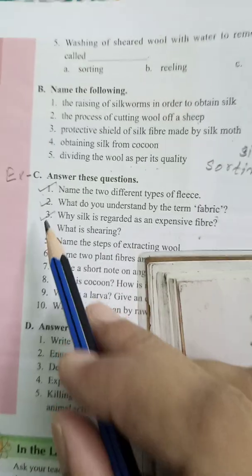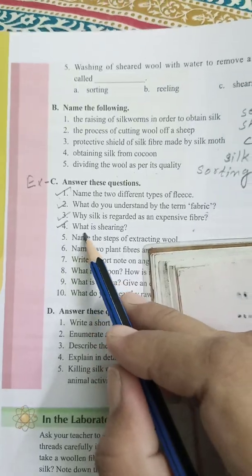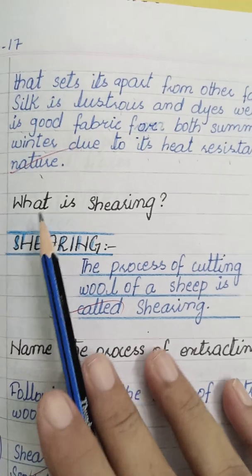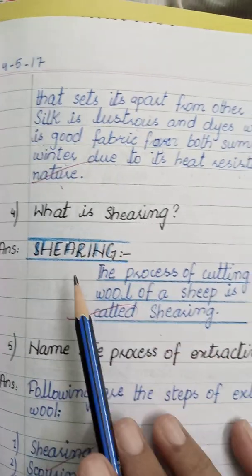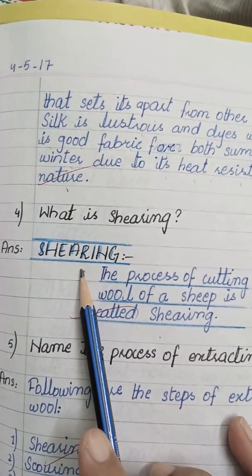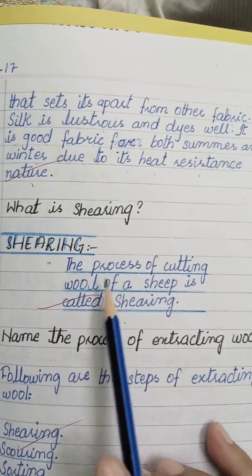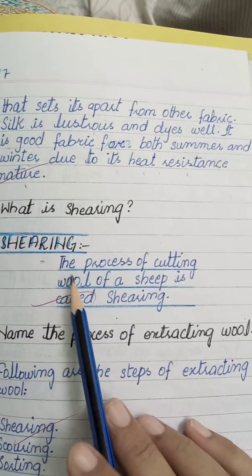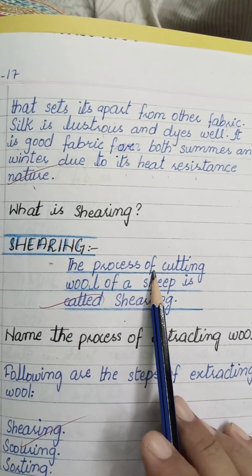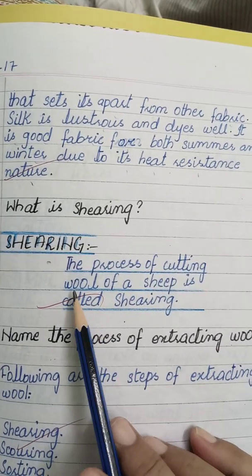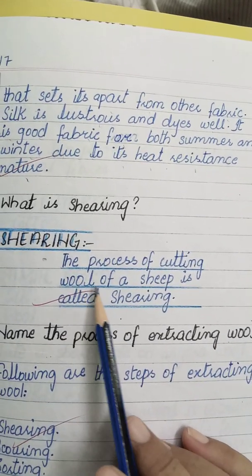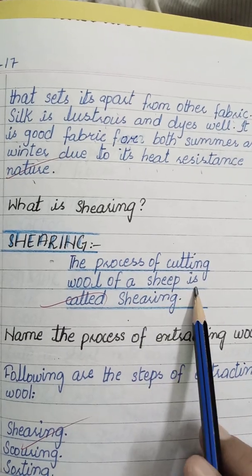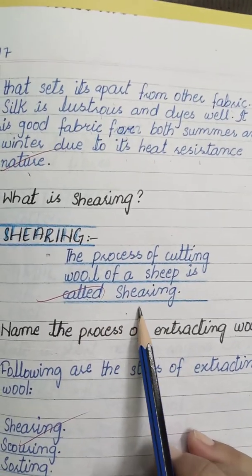Question number 4: What is shearing? Write the question and give the heading of shearing. The answer must be centralized: The process of cutting wool off a sheep is called shearing.